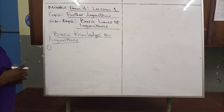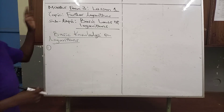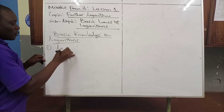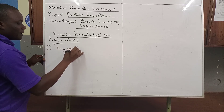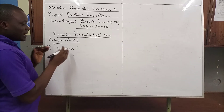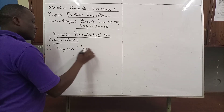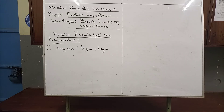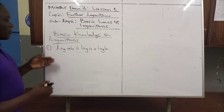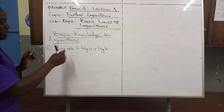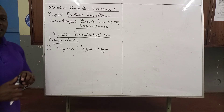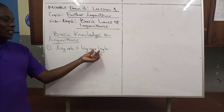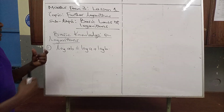Number one: what do we need to know? Under further logarithms, when we have been given log A·B, this means we can separate A and B by saying this is log A plus log B. The sign between A and B is a multiplication sign, and when there is a multiplication sign, we use an addition sign.